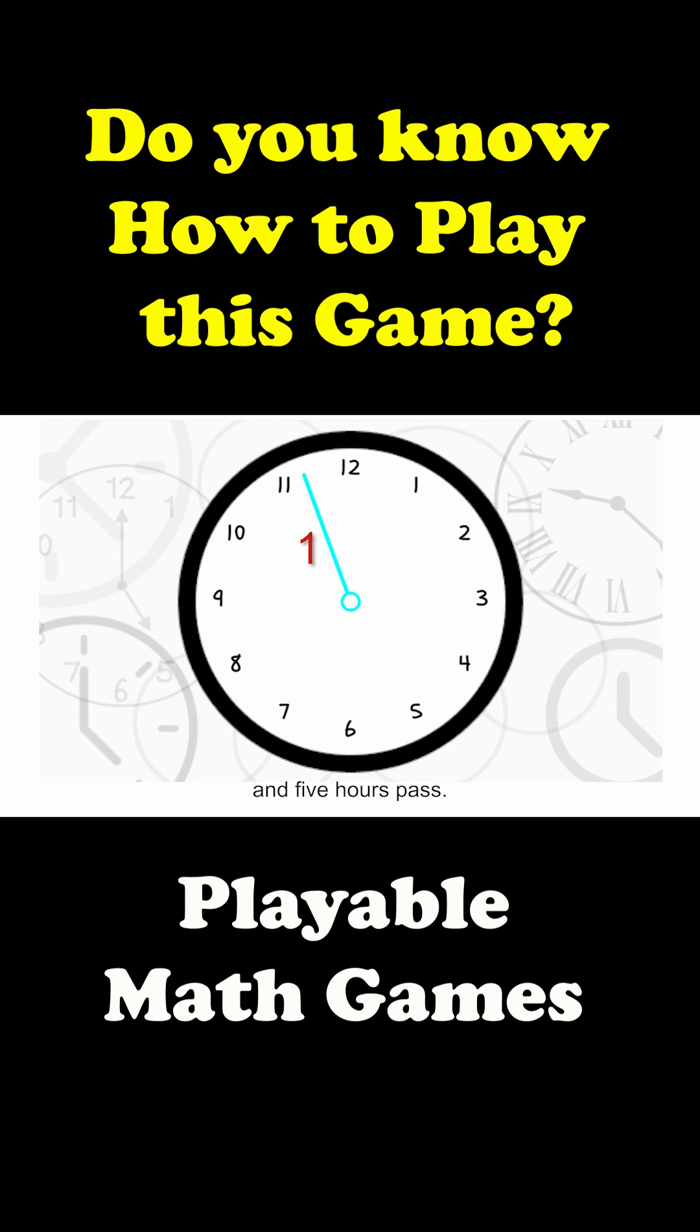it's 10 o'clock now, and 5 hours pass. What time will it be? Yup, 3 o'clock, not 15. That's because we're working in modulo 12, where numbers cycle back around after hitting 12.